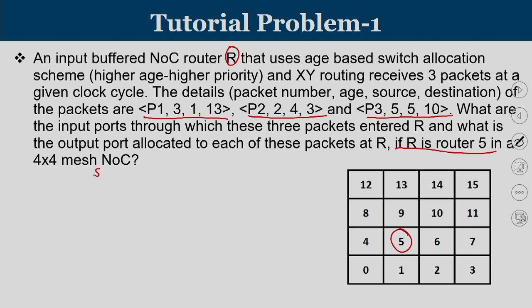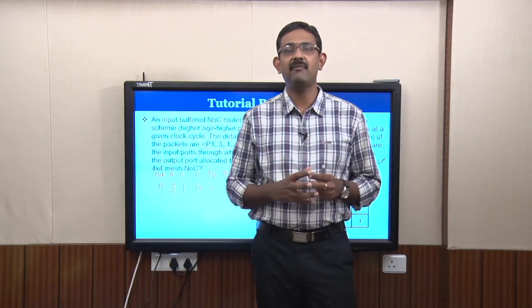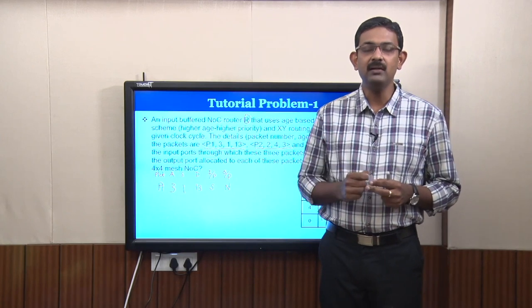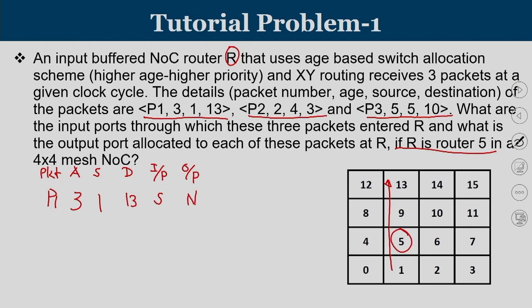We will find out what is the source, destination, input port, and output port that each packet wants. Packet P1 has age 3, coming from router 1 going to router 13. This packet travels from 1 all the way to 13. With respect to router 5, this packet arrives through the south input port and wishes to go to the north output port. So, P1's source is 1, destination is 13, and it arrives through the south input port of router 5.